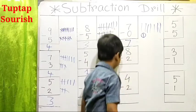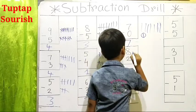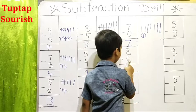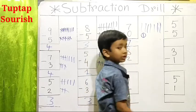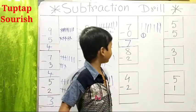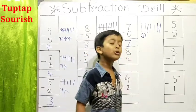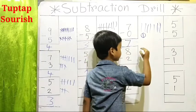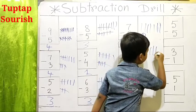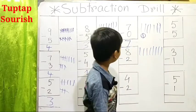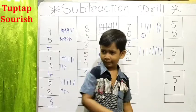Next example: 8 minus 2. Friends, you think you have got 8 mangoes. Let's draw here 8 lines: 1, 2, 3, 4, 5, 6, 7, 8. You see 2 mangoes are rotten and you throw them away.